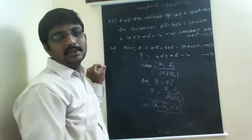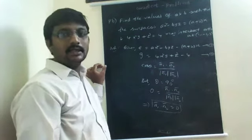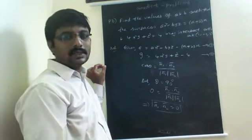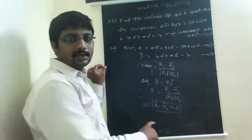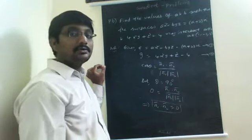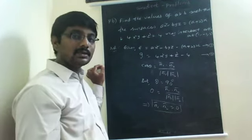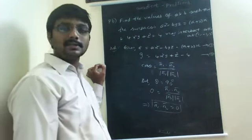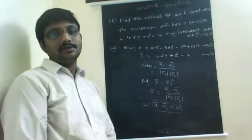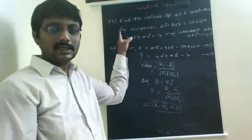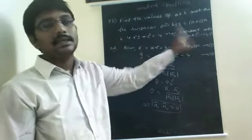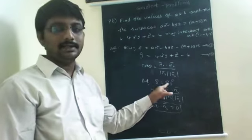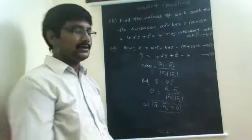Meeting orthogonally means the two surfaces are intersecting at the common point perpendicularly, so the two normals are perpendicular to each other. Therefore N1 bar dot N2 bar must equal 0. If the two normals were parallel, N1 bar dot N2 bar would equal modulus of N1 bar times modulus of N2 bar, since cos 0 equals 1. But here, orthogonally means theta is 90 degrees.